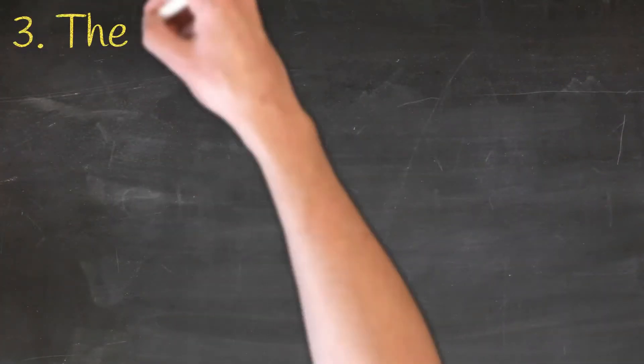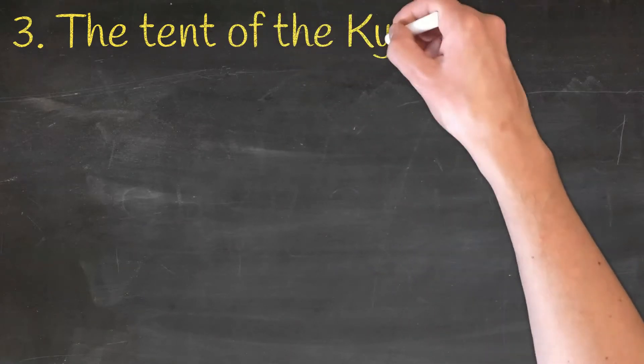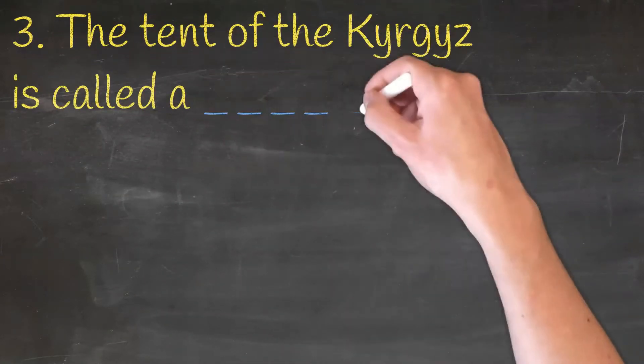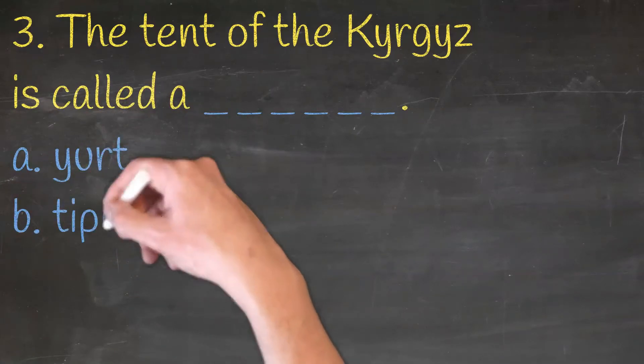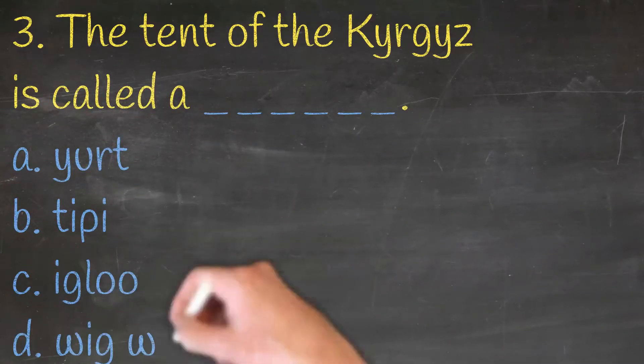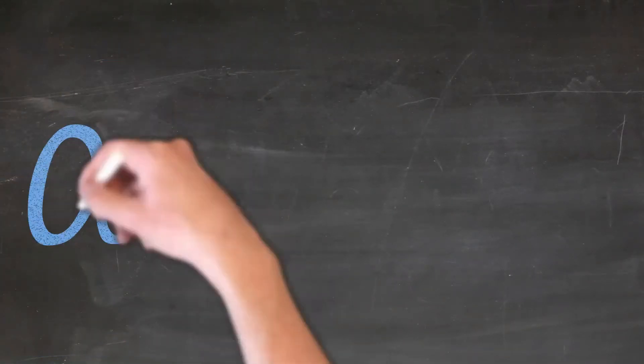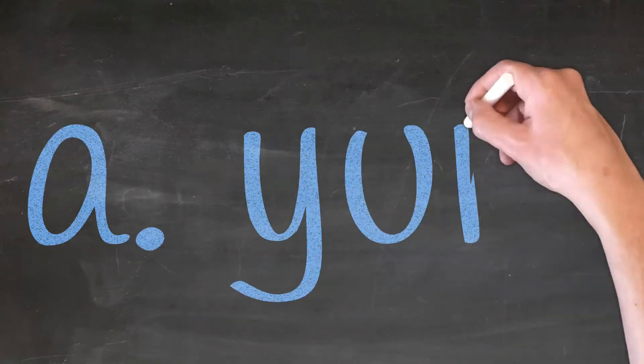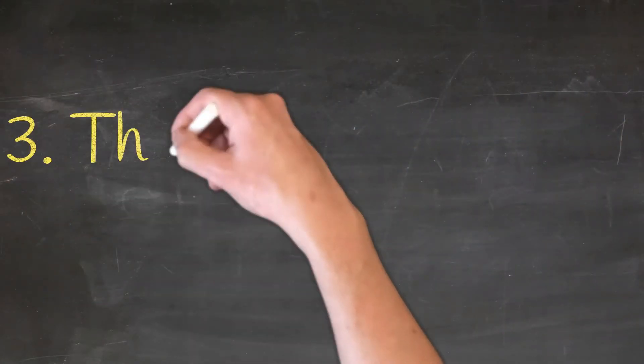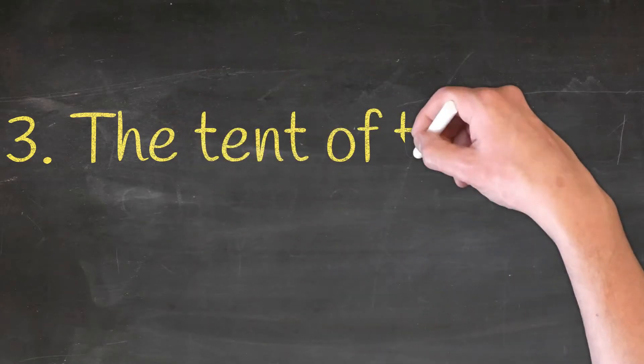The tent of Kyrgyz is called a dash. Yurt, teepee, igloo or wigwam. And the correct answer is a, yurt. The tent of the Kyrgyz is called a yurt.